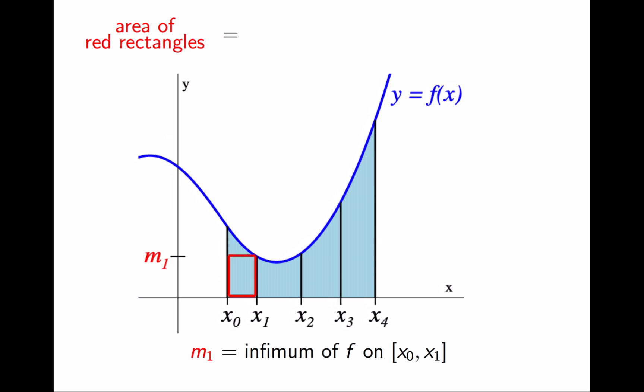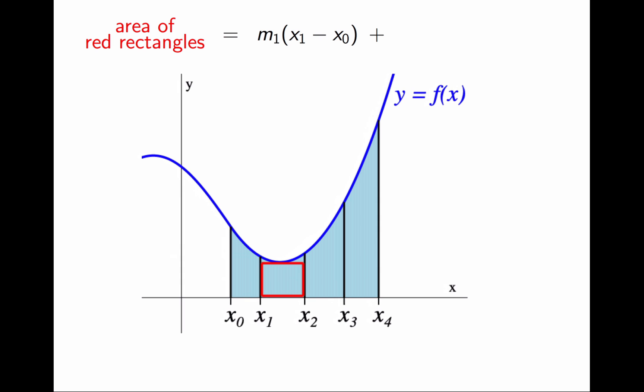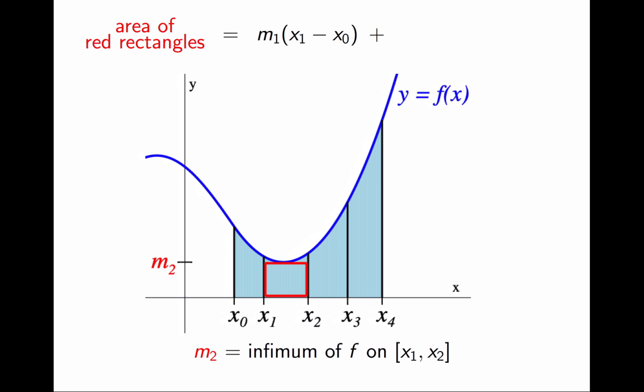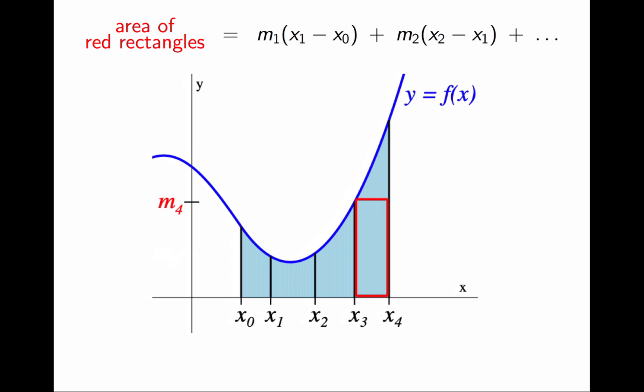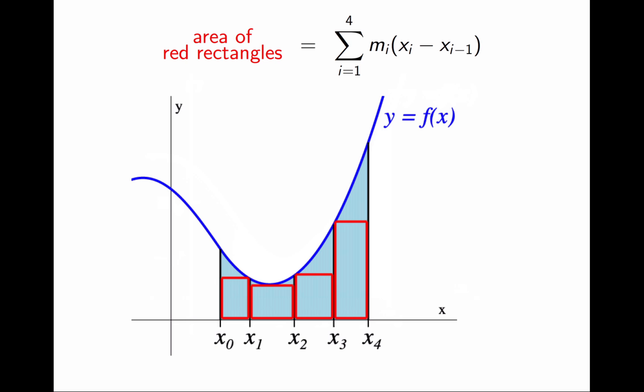Great! So the area of the first rectangle is the height, m₁, times the width, x₁ - x₀. Now to the second rectangle. The height is now different, m₂, which is the infimum of f on the second sub-interval, and the area is still height times width. In the same manner, I can add the area of the third rectangle and the fourth. It is convenient to rewrite this sum more compactly using sigma notation. The area of the red rectangles is the sum from i equals 1 to 4. In this case, it is 4. In general, the number of rectangles will vary.